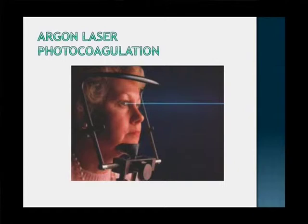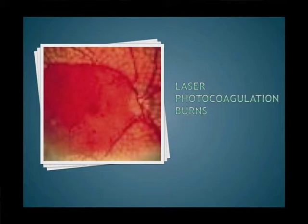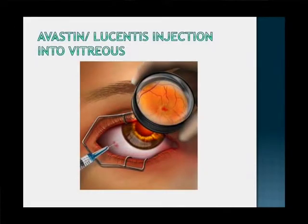Argon laser photocoagulation uses a bluish or greenish laser light focused onto the eye with a large contact lens. It's done under topical numbing drops only — no injection necessary — takes about 10 to 15 minutes, and you can go home right after. In pan-laser photocoagulation, multiple laser burns are applied over multiple sessions with the eye numbed; it's a comparatively more uncomfortable procedure. The intravitreal injection goes into the eye through a very tiny 30-gauge needle and is generally given two or three times once a month to stop the bleeding vessels.